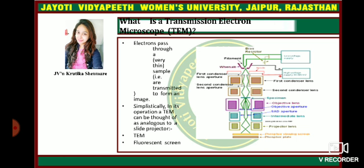It consists of the bias resistor, the filament, the first condenser aperture, then a second condenser lens aperture, and there is a specimen on which the electron beam is concentrated. Then there is an objective lens, an intermediate lens, and a projector lens.